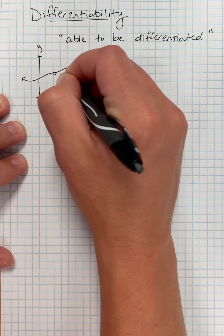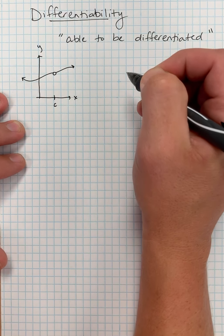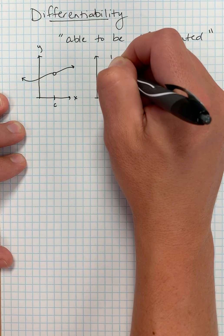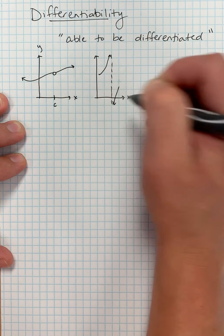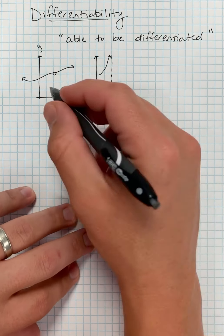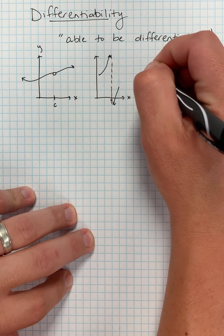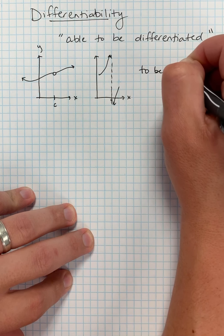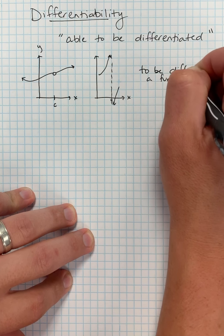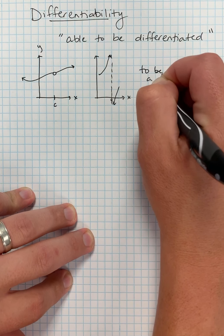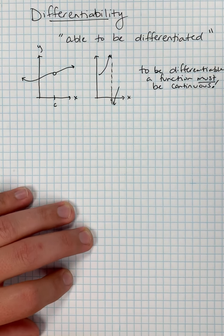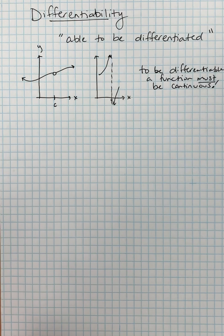If we have a function that has a hole at x equals c, or perhaps a function that has a vertical asymptote, any function that's not continuous at that c value is not going to be differentiable. So first, to be differentiable, a function must be continuous. That's the first condition: you need to be continuous there.